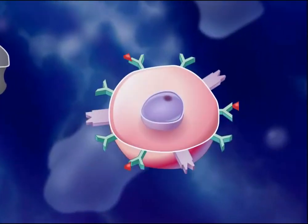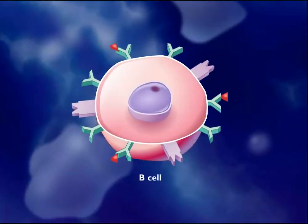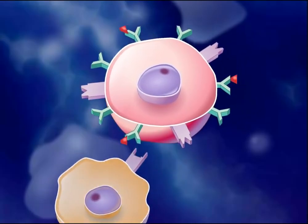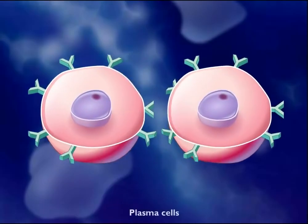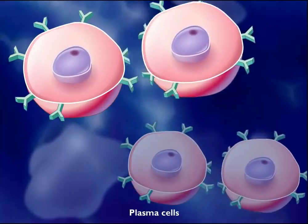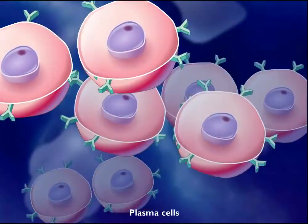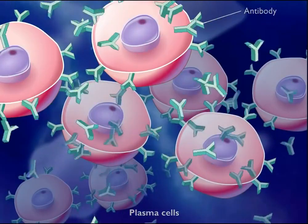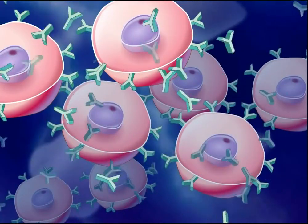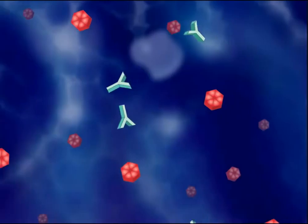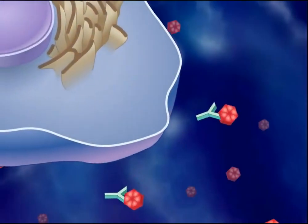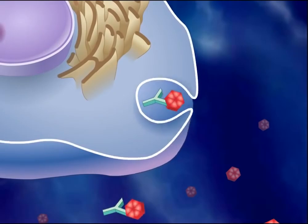B-cells also come in millions of different types, each able to recognize a particular antigen. When B-cells become activated by T-helper cells, they differentiate into plasma cells. These plasma cells become antibody-producing factories, flooding the bloodstream with antibodies that can bind to the antigen involved in this infection. Antibodies bind to the antigens on the surfaces of the pathogens, marking them for destruction by macrophages.